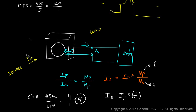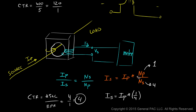Now suppose we remove the conductor and wrap it around the CT instead of passing it straight through. By wrapping the conductor around the CT, we have changed the number of primary turns — instead of 1, it is now 2. The number of secondary turns stays the same at 4.